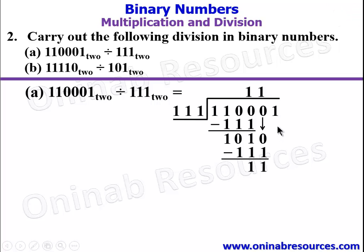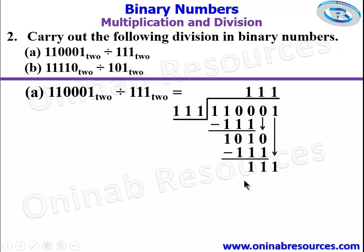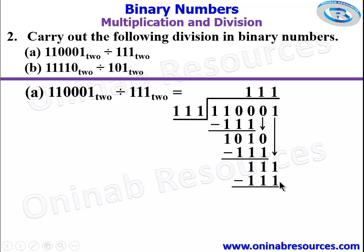We then bring the last digit which is 1. So 1111 divided by 111 gives 1. So 1 times 111 gives 111. When you subtract, you are going to have 0.